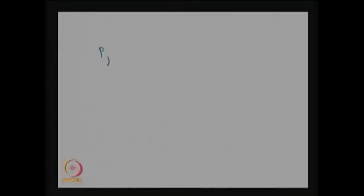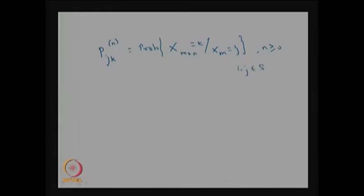In the last class we discussed the transition probability of j to k in n steps as the probability that X_{m+n} takes a value k given that X_m was j, for n greater than or equal to 0 and j belonging to S. Since the underlying DTMC is time homogenous, this is the n-step transition probability of the system moving from state j to k in n steps, denoted as p^(n)_{j,k}, where i, j belong to S.